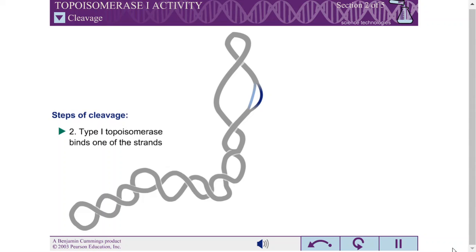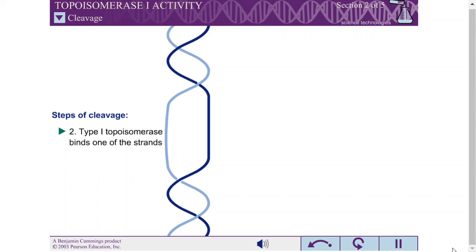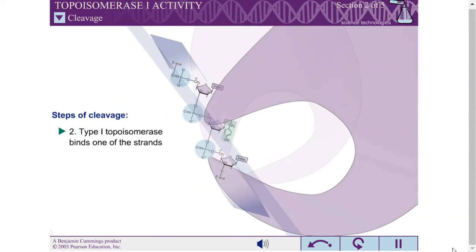One of the DNA strands binds in a cleft in the type I topoisomerase, placing it near the active site tyrosine.